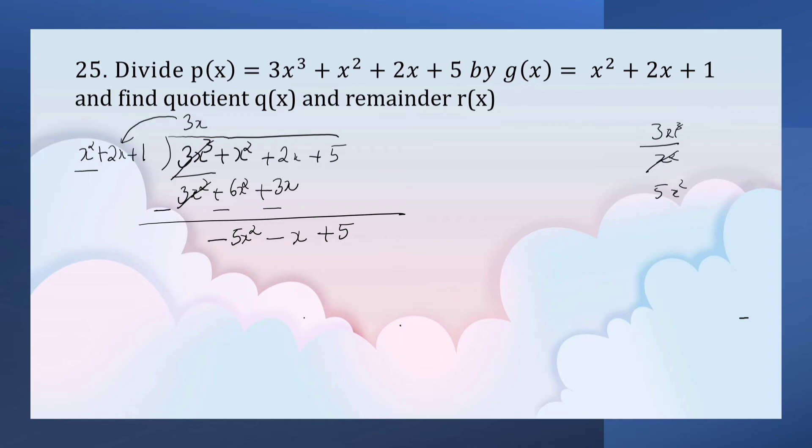Negative 5x² divided by x² equals negative 5. Negative 5 into x² is negative 5x², into 2x is negative 10x, into 1 is negative 5.